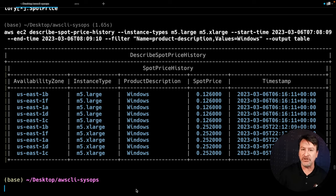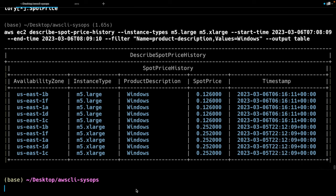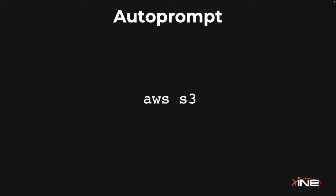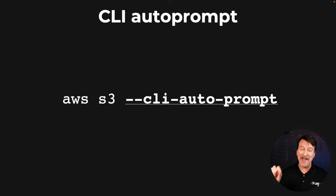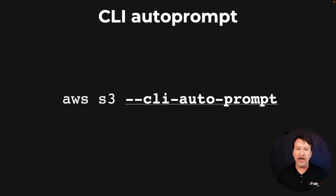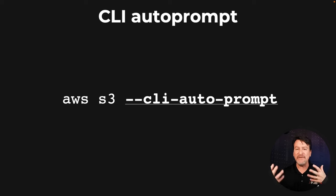Now, the last two things I want to show you is a little bit of additional help you can use. The first one being CLI auto prompt. CLI auto prompt goes by the more formal name of auto prompt. The idea: you've got AWS S3 and you don't know what you want to do. You need a little bit of help figuring it out. You run the command --cli-auto-prompt, and it will give you a sort of guided way of putting together a command. I'm going to about to make a mistake on purpose, because I'm going to show you that what the CLI auto prompt is really all about is helping you construct the query.